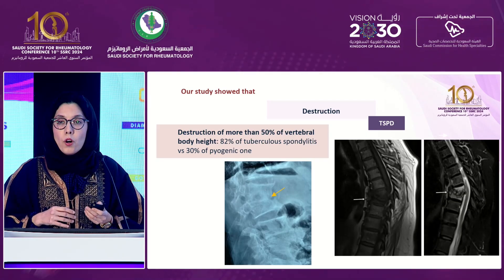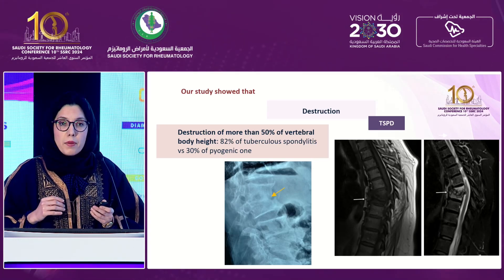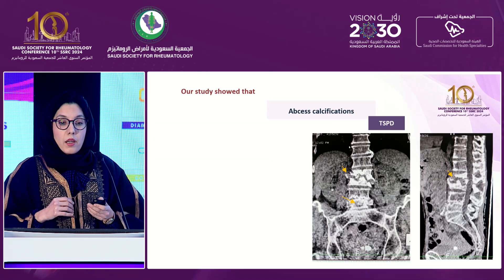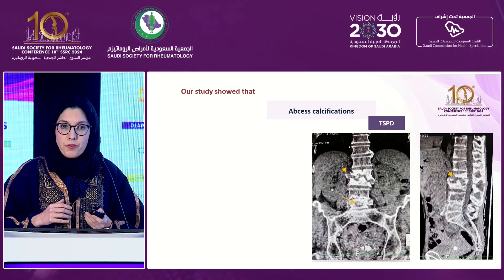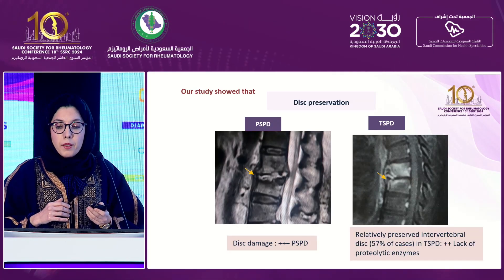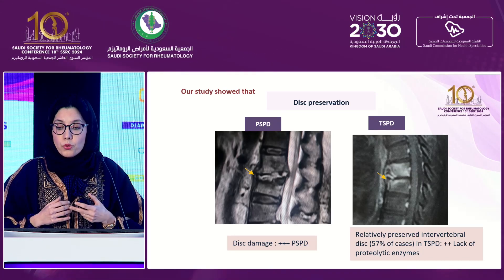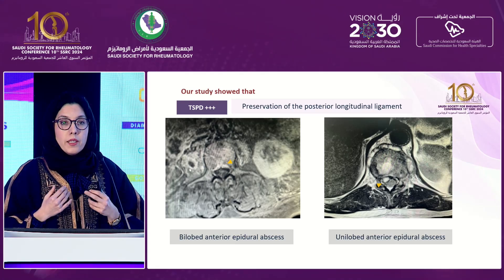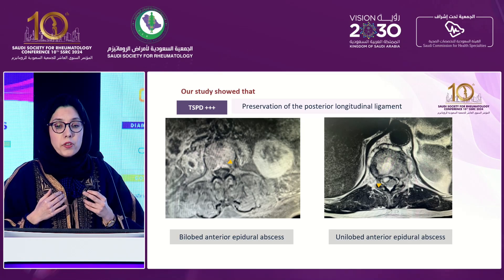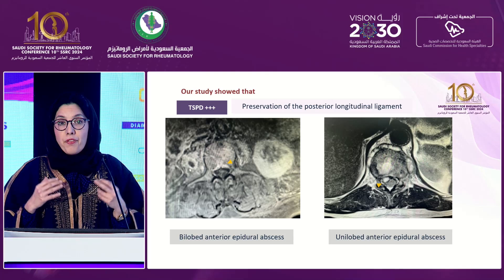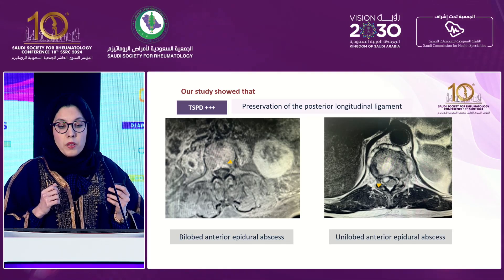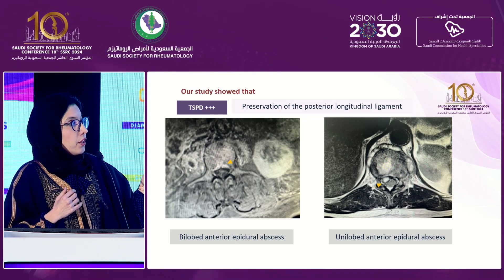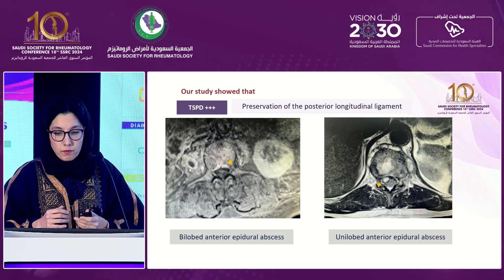Moreover, destruction of more than 50% of vertebral body height is common in tuberculosis, as seen in this radiograph and MRI of the spine. Tuberculosis is also characterized by abscess calcification and relatively preserved intervertebral disc, which can be due to a lack of proteolytic enzymes. This lack of proteolytic enzymes can also explain the preservation of the posterior longitudinal ligament. So if an anterior epidural abscess occurs, it will be characterized by a bilobed or unilobed appearance with preservation of the posterior longitudinal ligament.